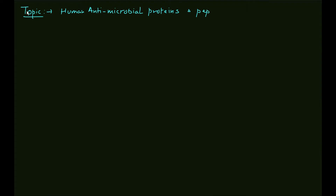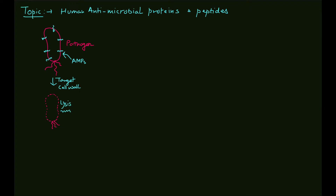Before discussing specific proteins, let me explain the mechanism of action of antimicrobial peptides. I have designed a diagram of a bacterial cell. The antimicrobial proteins bind to and affect the integrity of the membrane, targeting the cell wall, which causes the lysis of the pathogenic organism — in this case, a bacterial cell.